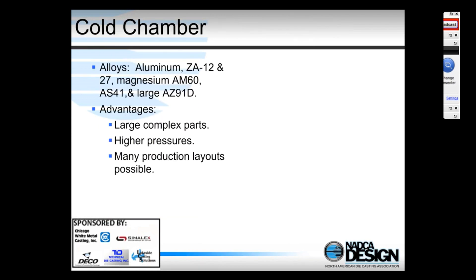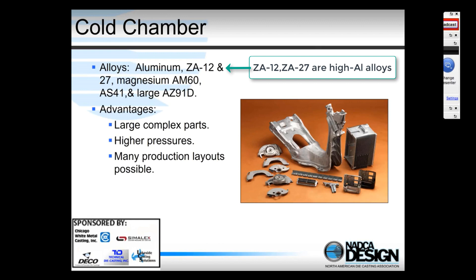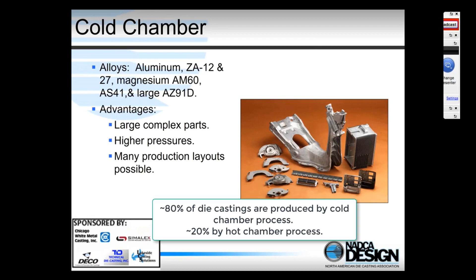For the cold chamber process, certain alloys must be used. Some zinc alloys with high aluminum concentrations — such as ZA12 and ZA27 — require the cold chamber process. Some magnesium castings also have to be produced using cold chamber, particularly the bigger castings. For example, the dashboard of a car is often a one-piece magnesium die casting, and hot chamber machines aren't large enough to produce it, so it's produced in a cold chamber machine.